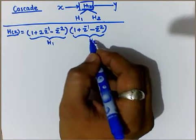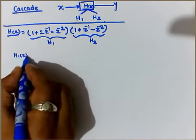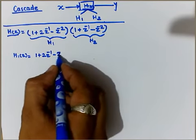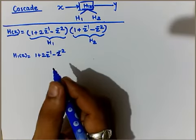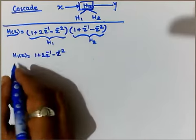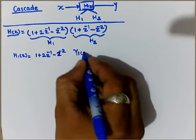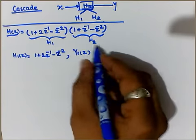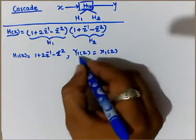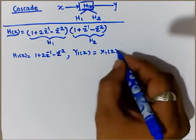It doesn't matter, only the representation should be appropriately done according to the given statements. So this is h1 of z, written as 1 + 2z^-1 - z^-2. If this is h1 of z, directly from this we may prepare y1 of z. Y1 of z is x1 of z.